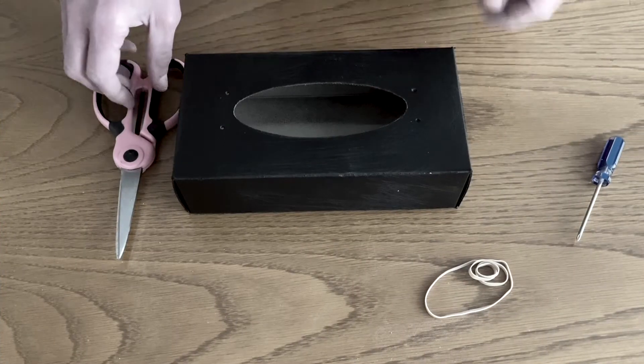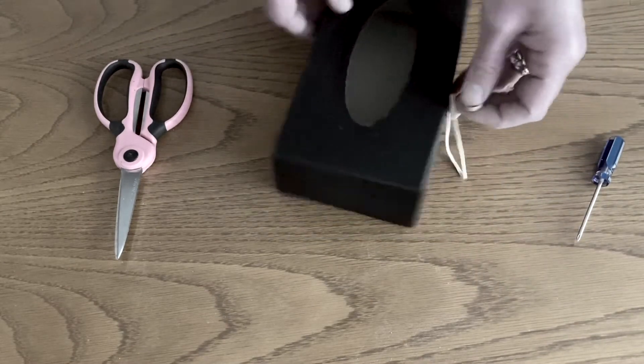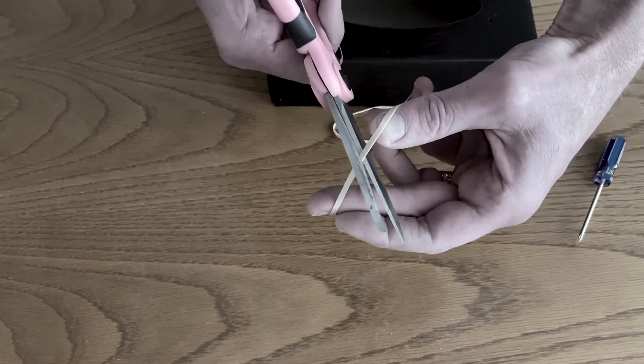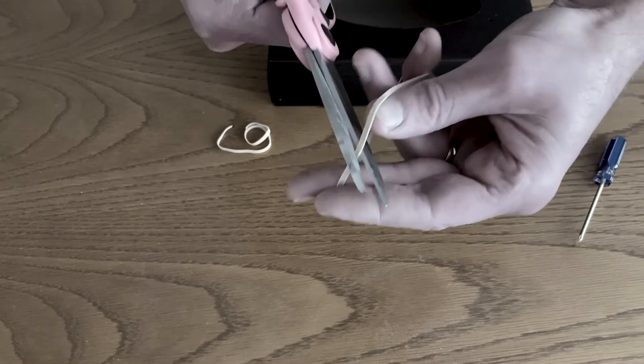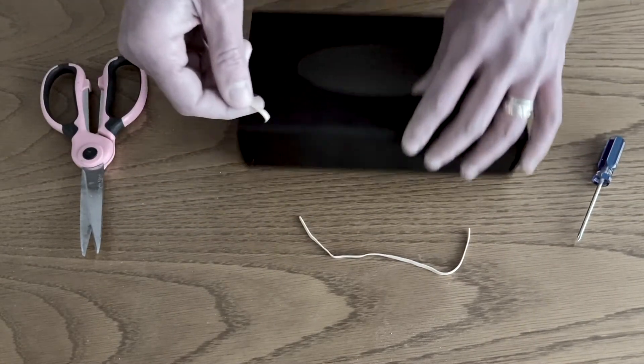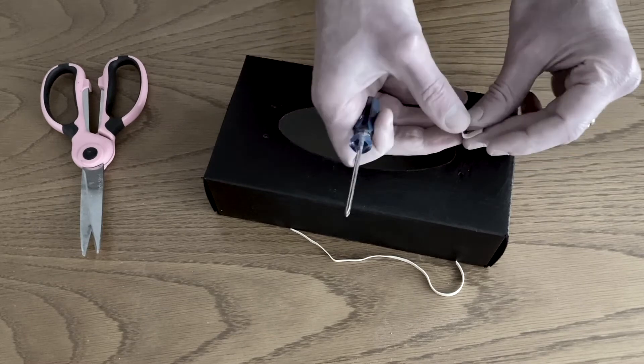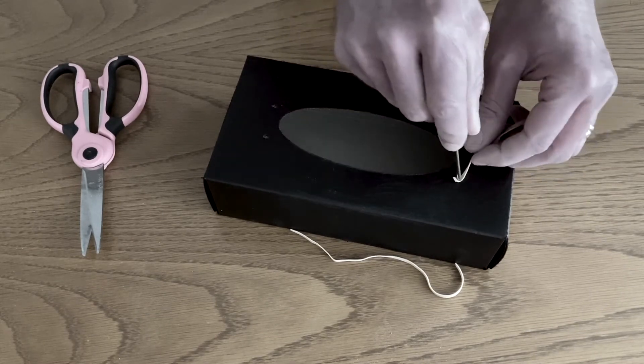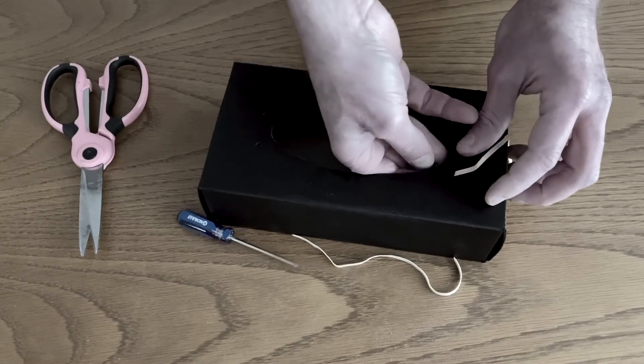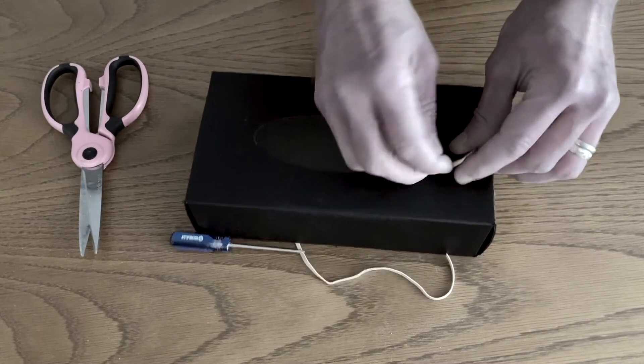Welcome back. The box is all painted and dried. Now it's time to apply the rubber bands. Take the scissors and cut each rubber band in half. One, two. Now use the small Phillips head screwdriver to feed the rubber bands through the four holes.